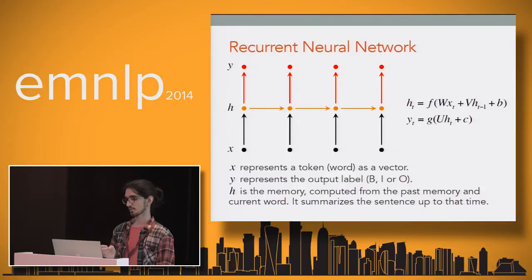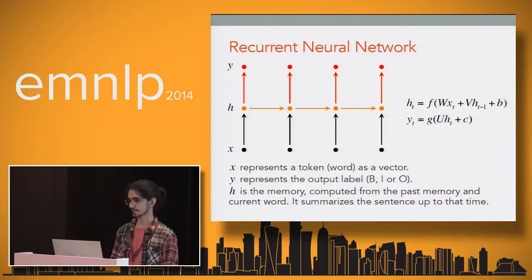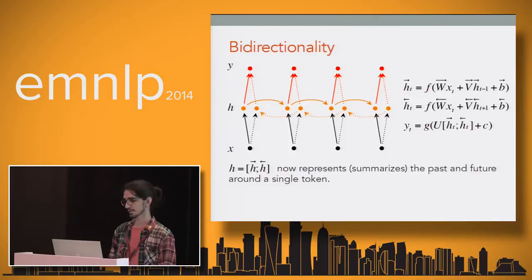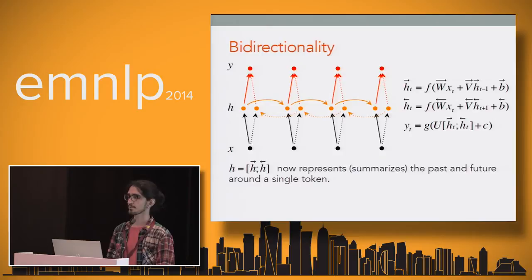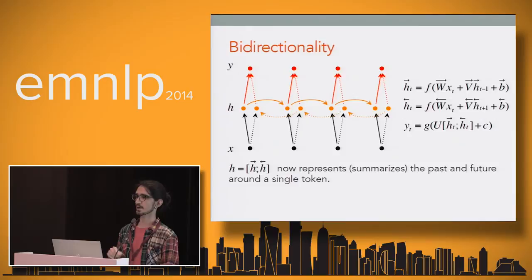When making a decision on a token we don't have any information about the future — the succeeding words — which is too limiting for most NLP tasks. To work around that, we use the bidirectional recurrent neural network, which has two memory representations: forward and backward memory, going left to right and right to left respectively. The forward memory is a summary of the past, and backward memory is a summary of the future, so together they summarize the whole sentence with a focus around the current token.